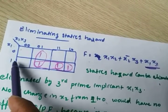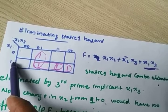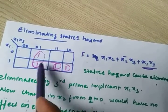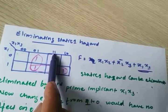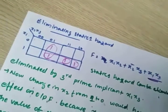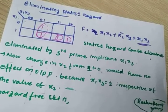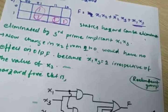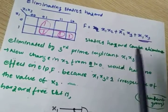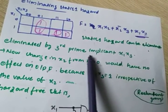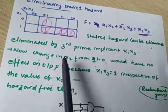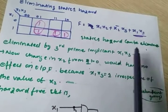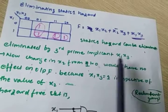To eliminate static hazard, our equation was x1x2 + x2_bar x3. Now we add the redundant group term x1x3. So the new equation becomes x1x2 + x2_bar x3 + x1x3. Static hazard can be eliminated by adding the third prime implicant x1x3.